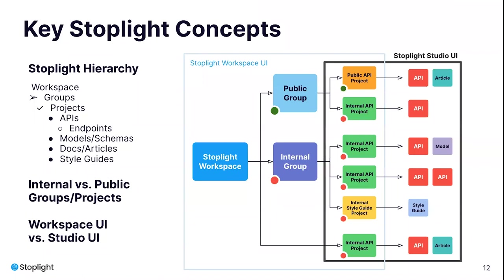Your technical team and API design architects will likely spend the majority of their time within the Studio user interface. Within a single project in Studio, you may have one or many API designs and OpenAPI specifications, models, and API documentation articles. Within a style guide project, you'll have the ability to manage rules and functions. When you transition between individual Stoplight projects, you'll navigate from Studio back to the workspace, select a new project, and then head back into Studio to edit the specific artifacts associated with that project.